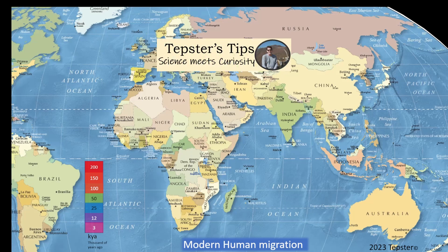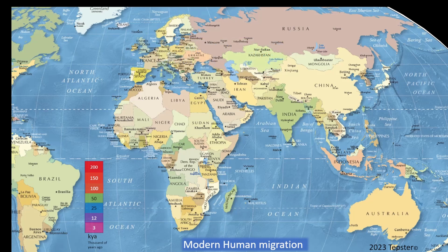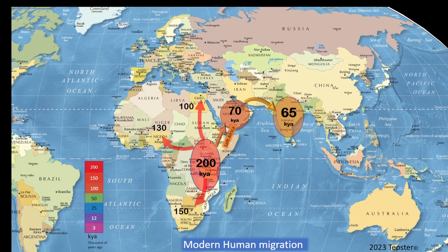Previously on Tepsters Tips, we traced the path of human migration out of Africa. That video showed modern humans originated in Africa approximately 200,000 years ago and started their global expansion 70,000 years ago. You may wonder how scientists came to these conclusions. Today we'll delve into how DNA is used to unveil the route and timing of the journey modern humans undertook as they left Africa.